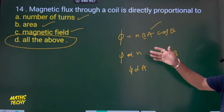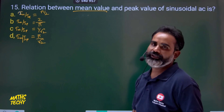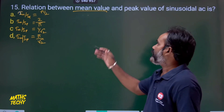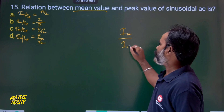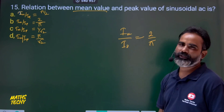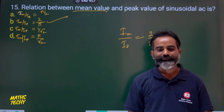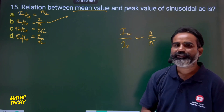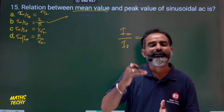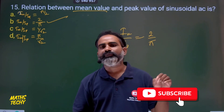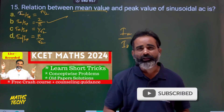Question 15: The relation between mean value and peak value in AC — the mean (average) value is Im = 0.636 × Ip (approximately 2/π times the peak). From the options, option B gives the correct relation. For full preparation, watch the related videos on the channel and subscribe for annual exam preparation. Share the video and refer it to your juniors.